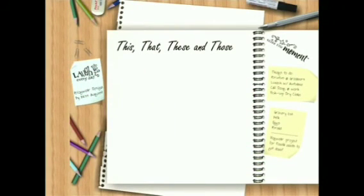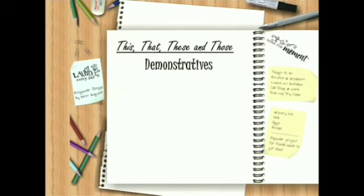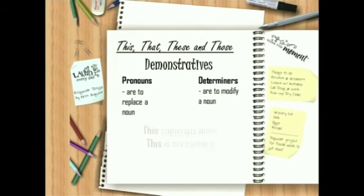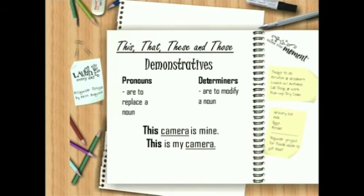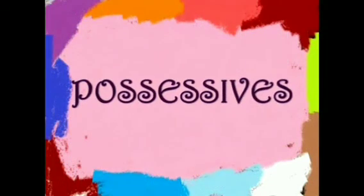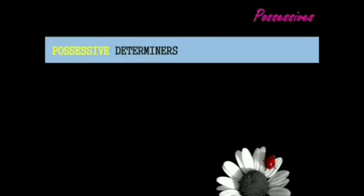Demonstratives depend on number and vicinity. 'This camera is my camera' — the noun 'camera' is modified by the demonstrative 'this.' In the second sentence, 'this is my camera' — it is showing a possession. Possessives are also determiners, and we have possessive pronouns too. The possessive precedes the noun — the thing being possessed.